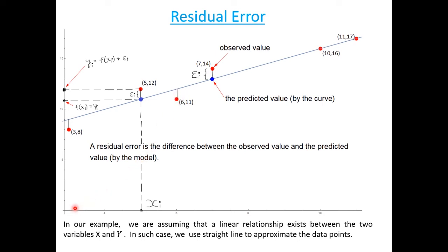Here the residual error is positive and here it is negative. For example, if we take xi = 5, the corresponding observed value yi = 12. But the predicted value given by the curve is less than 12 — it is 11. So there is an error. Therefore, yi = f(xi) + epsilon_i, meaning the observed value yi equals the functional value at xi plus the residual error.